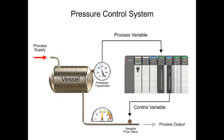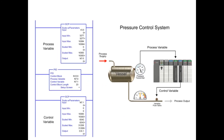In the following program example, the PID instruction is used to control pressure of a vessel. Using a pressure transmitter as the process variable and a flow valve as the control variable, the set point is maintained at 50 PSI.